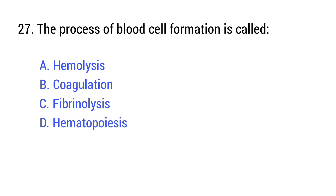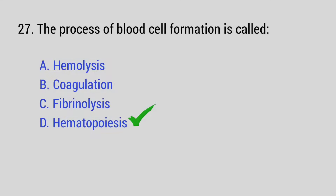Question number 27. The process of blood cell formation is called — the right answer is option D: Hematopoiesis.